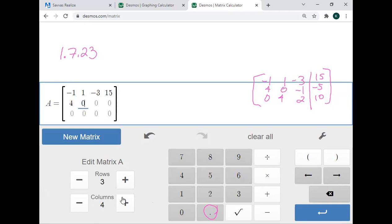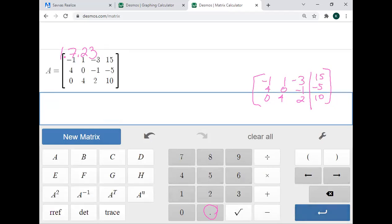Four, zero, negative one, negative five in the second row. Zero, four, two, ten in the third row. Enter it in the bottom right button.